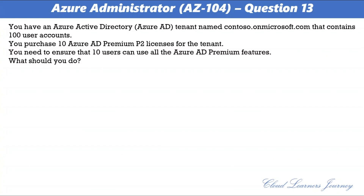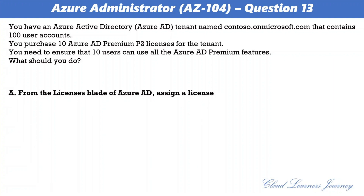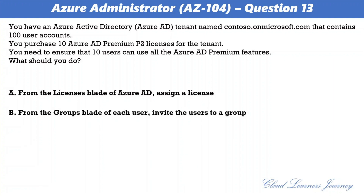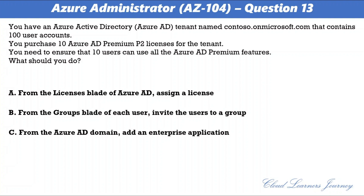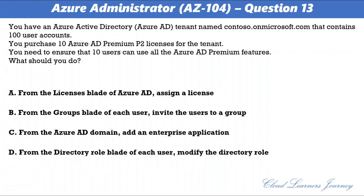Question number 13. You have an Azure Active Directory tenant named contester.onmicrosoft.com that contains 100 user accounts. You purchase 10 Azure AD Premium P2 licenses for the tenant. You need to ensure that 10 users can use all the Azure AD Premium features. What should you do? The options are: a) from the Licenses blade of Azure AD, assign a license; b) invite users to a group; c) add an enterprise application; d) modify the directory role. The correct answer is a — from the Licenses blade of Azure AD, assign a license.